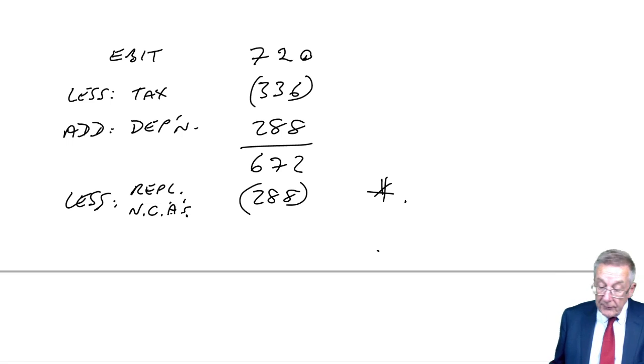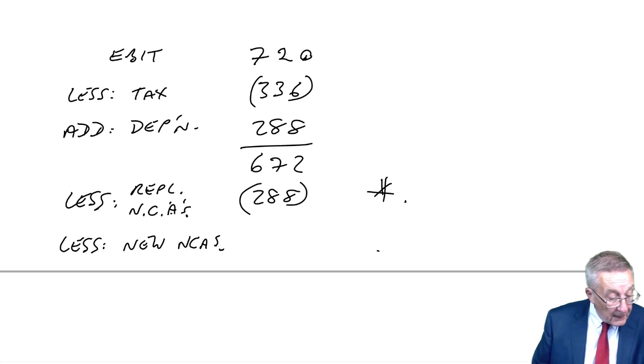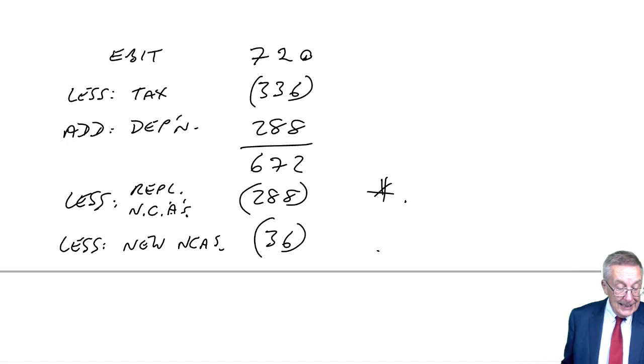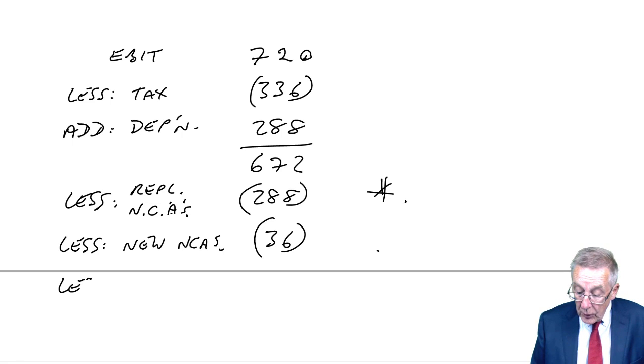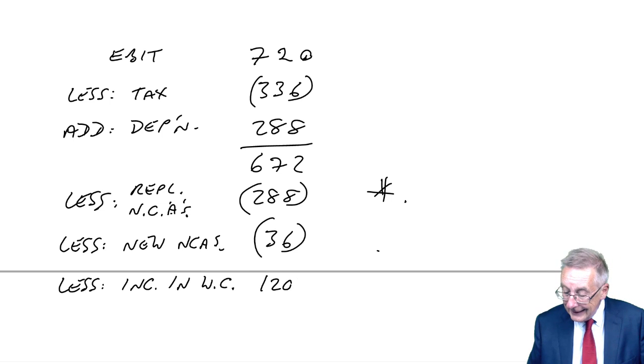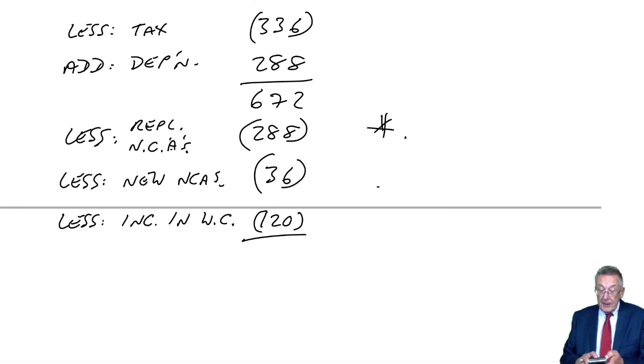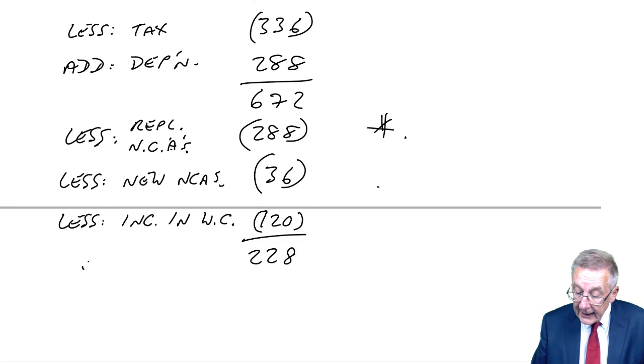There's the cost of new non-current assets. The question told us it was 36. And for the same reasons as before, there's an increase in working capital, 120. So far, it's identical to what we did earlier. If I do a subtotal here, 672 minus 288 minus 36 minus 120, this is what we got before, the free cash flow, 228.